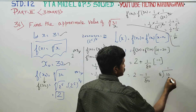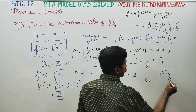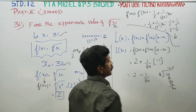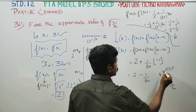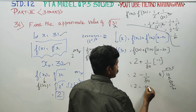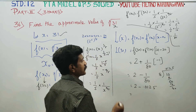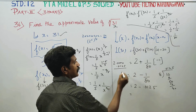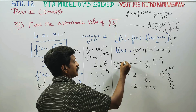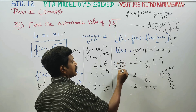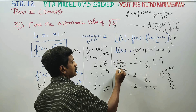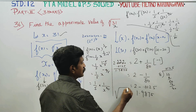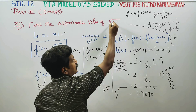Now computing 1 divided by 80: 1 by 80 gives 0.0125. So L of 31 equals 2 minus 0.0125, which equals 1.9875. Therefore 1.9875 will be your approximate answer for L of 31.